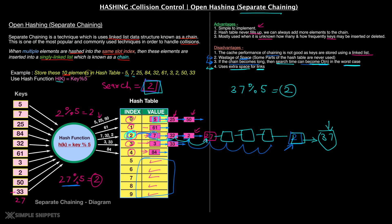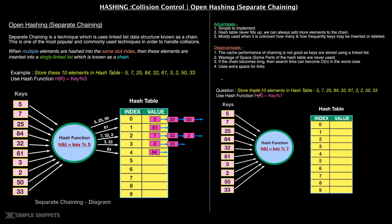Now that you've understood the basics of open hashing — what is separate chaining, how it looks visually, and its advantages and disadvantages — let's take a quick example. Here's a question: store these 10 elements in the hash table using the hash function h(k) = key mod 7.